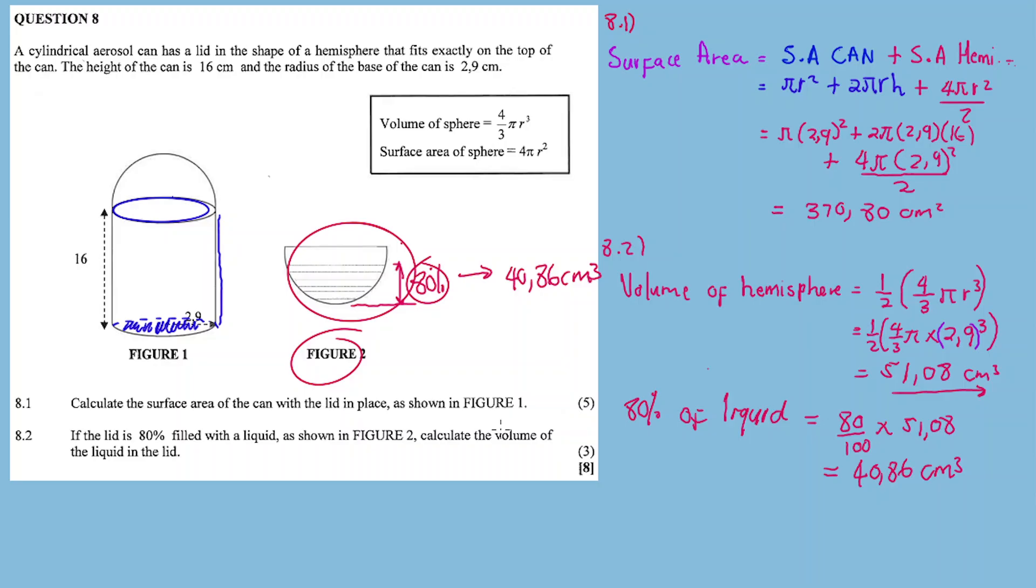This means 80% represents 40.86 cubic centimeters of the total volume of the hemisphere or the lid. That's Question 8 complete. I hope you enjoyed it.